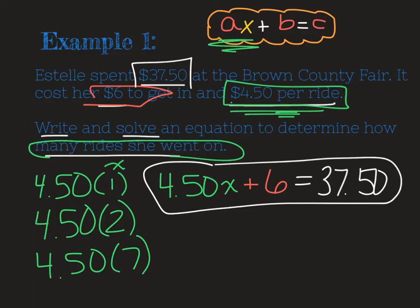So here's the first part of this problem. We wrote our equation to represent the situation. Now we need to solve it using inverse operations. So I see that I am going to first need to subtract six off of both sides. And what that leaves me with here is $4.50 times x equal to $31.50. And if I think of this in terms of the actual problem, what that means is, okay, so she had $37.50. And then after she paid the $6 to get in, she had $31.50 left to go on those rides.